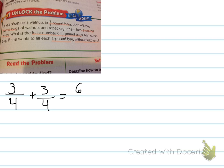Two three-fourth pound bags would give me six-fourths. Well, six-fourths is the same as one and two-fourths — six divided by four is one, remainder two is the numerator, and the denominator stays the same. So one and two-fourths — no, that's not whole pound bags.